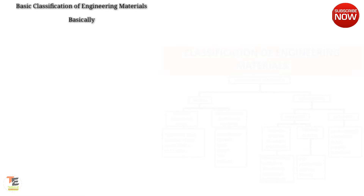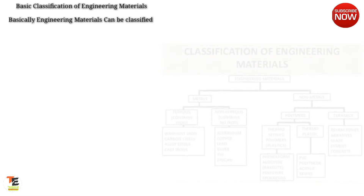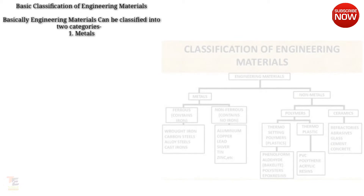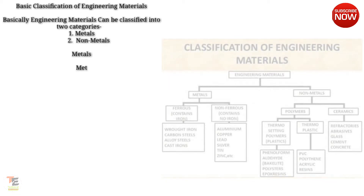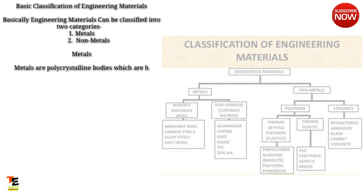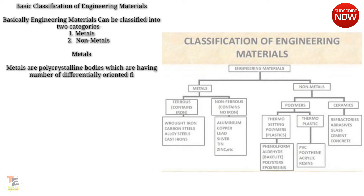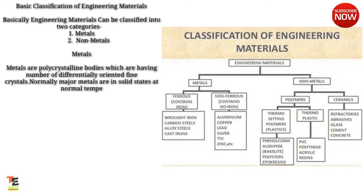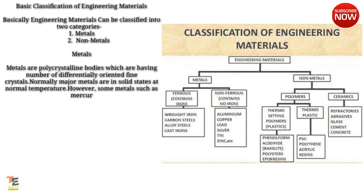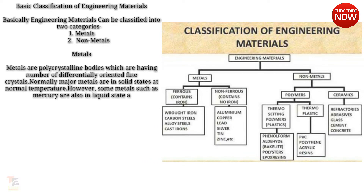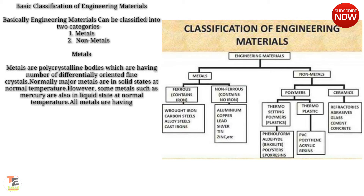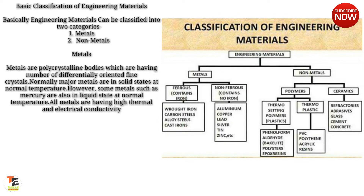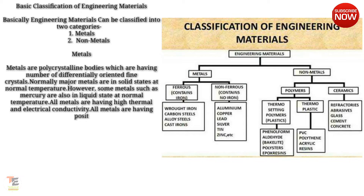Basic classification of engineering materials: engineering materials can be classified into two categories — one: metals, two: non-metals. Metals are polycrystalline bodies which have a number of differentially oriented fine crystals. Normally, major metals are in solid states at normal temperature. All metals have high thermal and electrical conductivity.